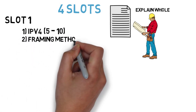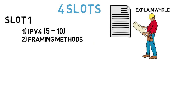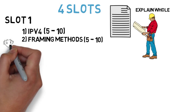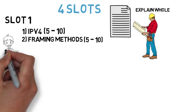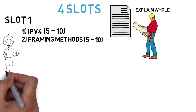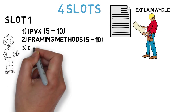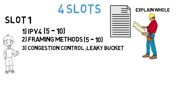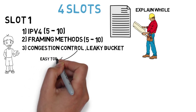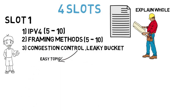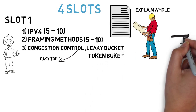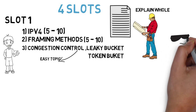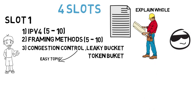The second question is: explain different framing methods and the advantage of variable length frame over fixed layer frame. This can come for five to ten marks. Framing method is a really easy topic. The third question is congestion control — explain the leaky bucket algorithm. Congestion control is an easy topic with only two algorithms: leaky bucket and token bucket. If you cover both, you can easily score good marks.